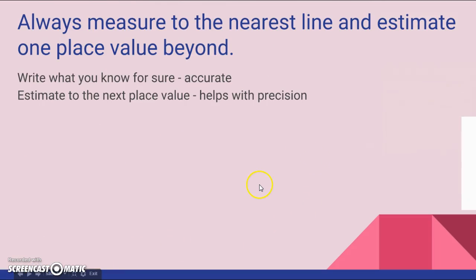Always measure to the nearest line and estimate one place value beyond. Write this down - this is where it's getting into our lab data. We want to talk about what we know for sure how accurate it is, and estimate to the next place value to help see if we're really being precise. In chemistry, always measure to the nearest line on your tool and estimate one place value beyond. Let's do an example.